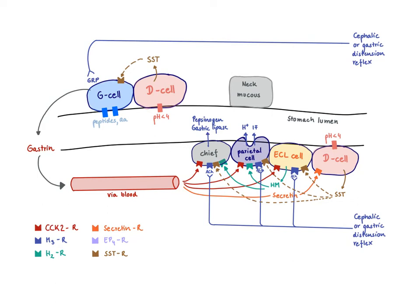At that point, our major player is somatostatin, which I've abbreviated here as SST. Somatostatin is secreted by the D cells. Those D cells have pH-sensitive receptors, so once the pH goes very low, those cells start to make somatostatin.